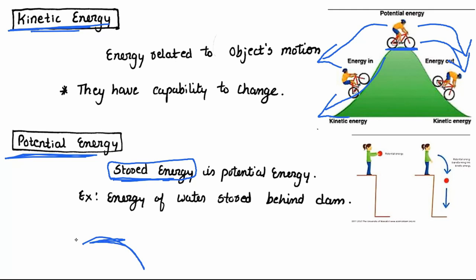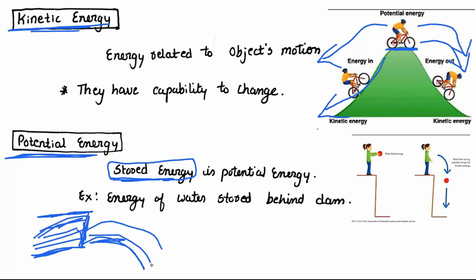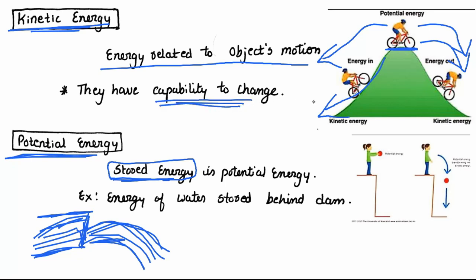For example, water stored behind a dam has potential energy — if it comes down, it will do some work. Kinetic energy is energy related to an object's motion — when something is in motion, it has the capability to cause change. So, potential energy is stored energy and kinetic energy is energy related to an object's motion.